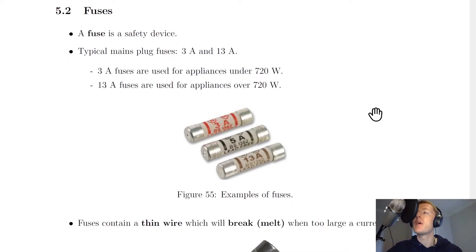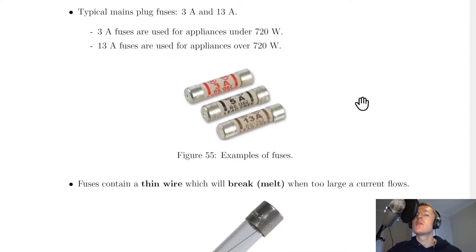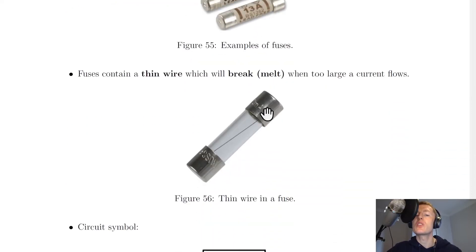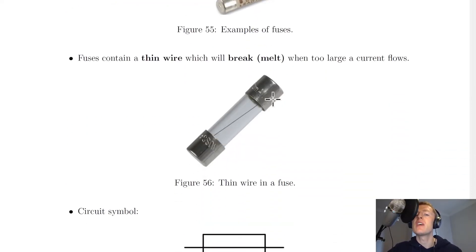You'll see a picture here of some typical fuses. We're interested in the 3 amp and the 13 amp fuse. In case you're wondering what's inside here, well, we've got these two metal contacts on either end, and then inside this little tube you've got a thin wire. This thin wire will break or melt when too large a current flows.